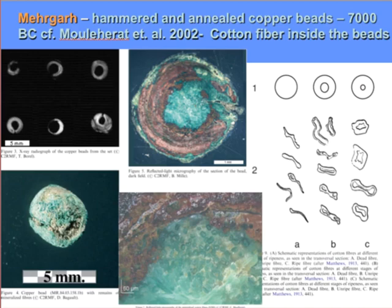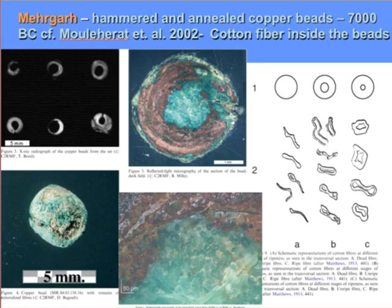More importantly, Mehrgarh has examples of the earliest cotton. Cotton was found inside of a hammered copper bead. At 7000 BC, the people of Mehrgarh had no pottery and no metal tools, only stone tools — but they found native copper, hammered it into a bead, and collected probably wild cotton, spun it into thread, and that thread is preserved inside these beads. Studied by Mulekharat, the shape of the fiber was identified as different forms of cotton — both immature and fully matured fluff. This is the earliest evidence of the use of cotton in the world.